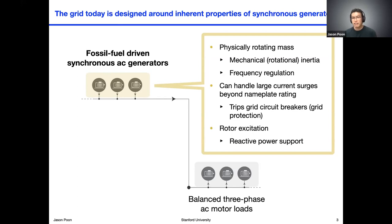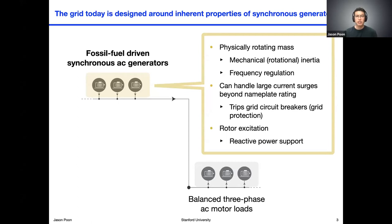That's really important because when faults occur on the grid, such as a short circuit fault, synchronous generators can provide this very large surge current. Various protection mechanisms on the grid are carefully looking for these surges in current to either trip a circuit breaker or activate their protection mechanism. Finally, reactive power support is a very important control mechanism of the electric grid today, enabled very easily with synchronous generators simply by changing the excitation of the rotor.